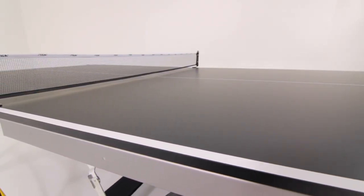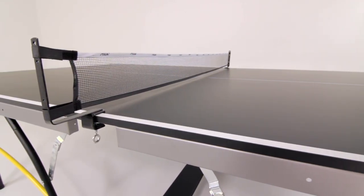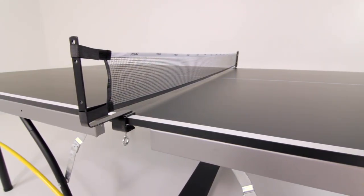This table has a 5/8-inch thick black top with sleek silkscreen table striping and includes a Stiga 66-inch net and post set.